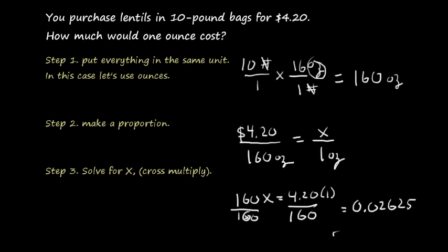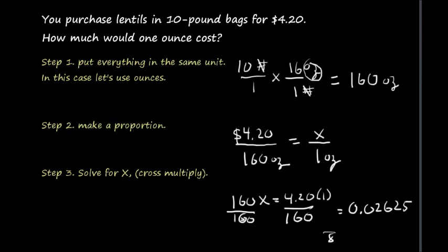Now this is money, so what we want to make sure to do is we want to take that money and account for partial pennies. So even if it was 0.021, whatever that piece is is going to bump up to a whole penny. So our final answer is three cents for one ounce.